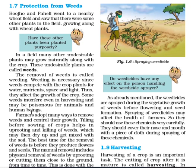The removal of these weeds is called weeding. Weeding is necessary since weeds compete with the crop plants for water, nutrients, space, and light. Thus, they affect the growth of the crop. Some weeds interfere even in harvesting and may cause crops to be poisonous for animals and humans.